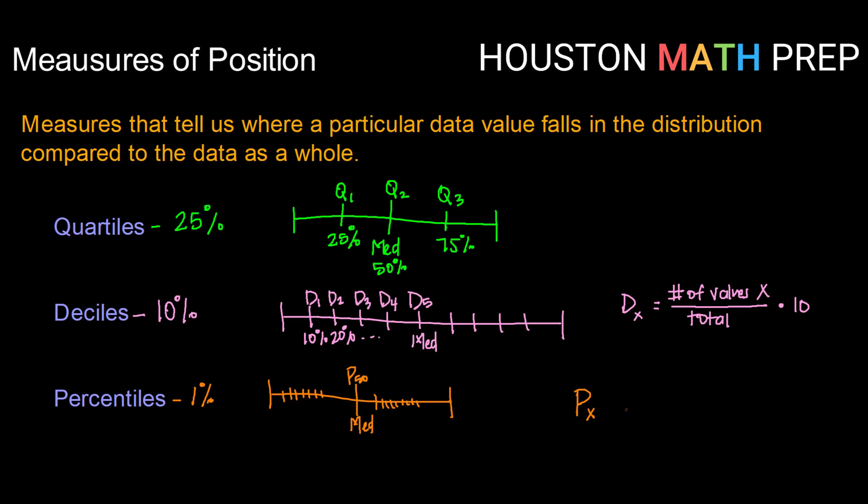To find the percentile for any particular value, we can take the number of values below x, divided by the total number of data values, and multiply that by 100.